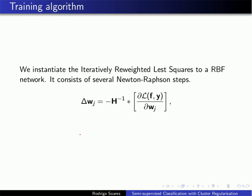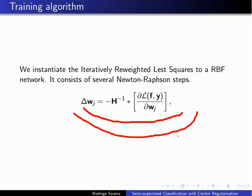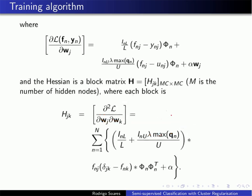We implemented our classification algorithm with IRLS — Iteratively Reweighted Least Squares — which consists of several Newton-Raphson steps. Here are the derivations for the gradient part of the Newton-Raphson step and the Hessian matrix.